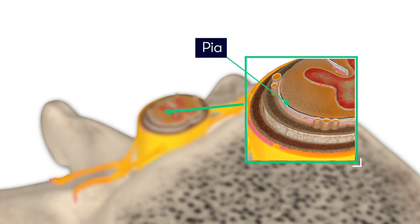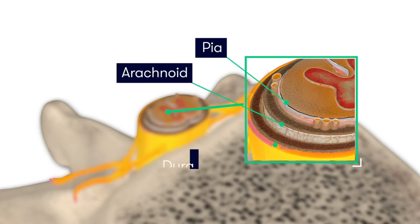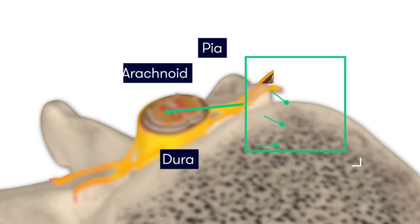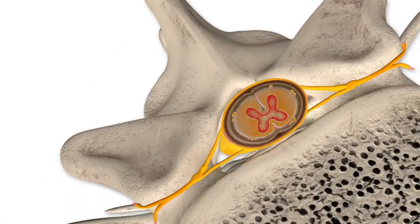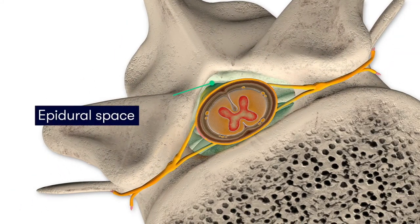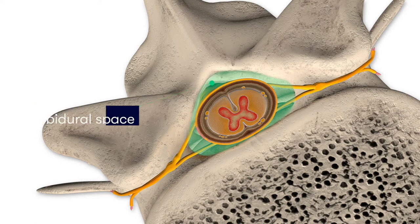The meningeal layers are the pia, the arachnoid, and the outermost layer, the dura. The space outside of, or superficial to, the dural layer is known as the epidural space. It is this area that is targeted for catheter insertion and anesthesia administration when undertaking epidural anesthesia, to help inhibit sensory nerve signals arriving to the spinal cord.